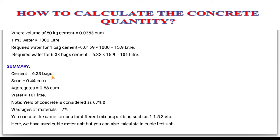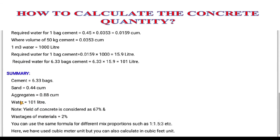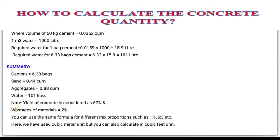Summary for this concrete calculation: cement required is 6.33 bags, but we will take 7 bags since cement is not sold in fractions. Sand required is 0.44 cubic meters. Aggregates required is 0.88 cubic meters. Water required is 101 liters. Note: yield of concrete is considered as 67% and wastage of material is 2%. You can use the same formula for different mix proportions such as 1:1.5:3 for M20 grade, or M5, M7.5, M25 grades — their ratios will also change accordingly.